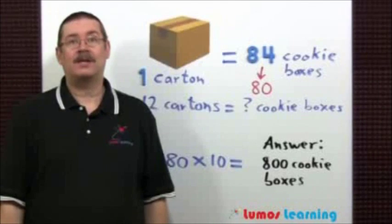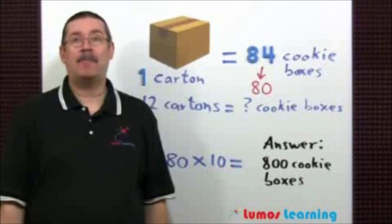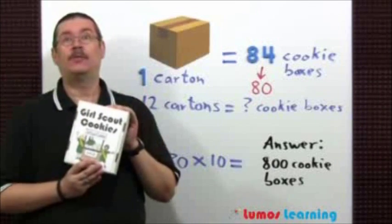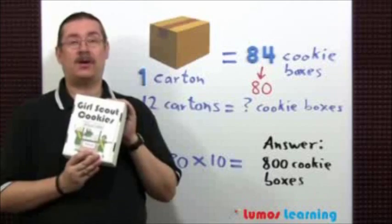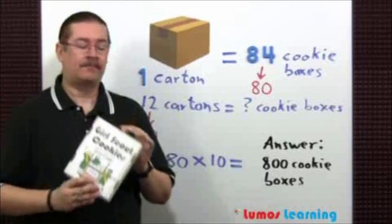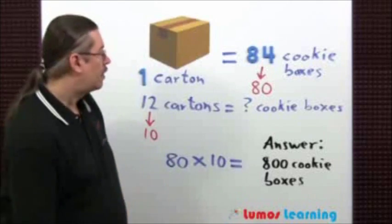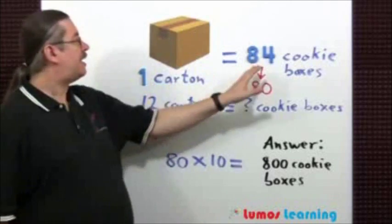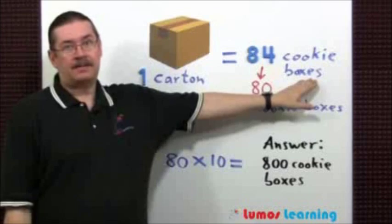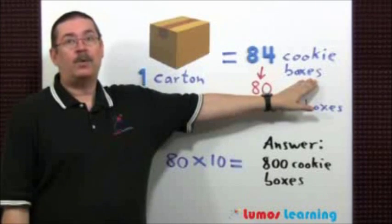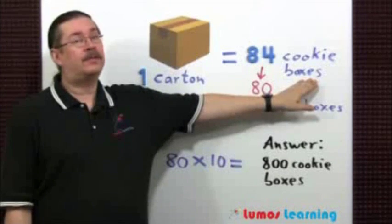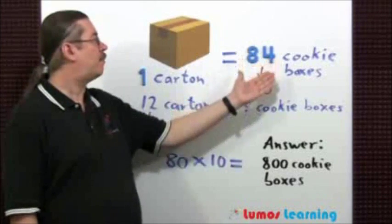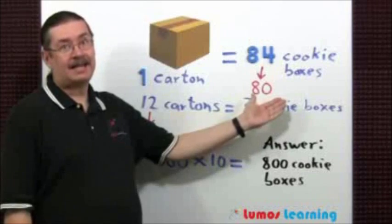For this question, we want to know about how many cookie boxes would be in 12 cartons. Well, we know one carton contains 84 cookie boxes. We want to use rounding to the nearest ten, so 84 becomes 80.